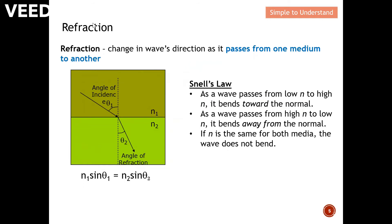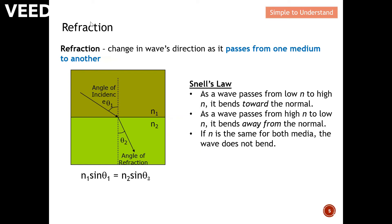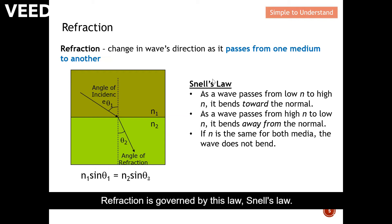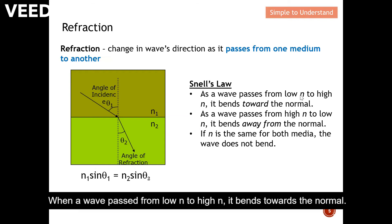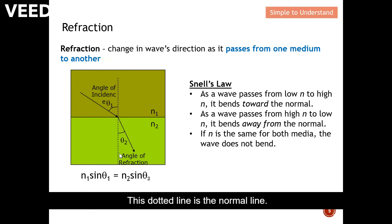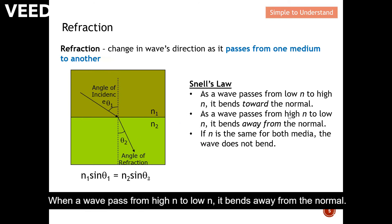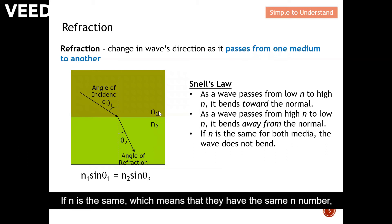Next, let's understand what is refraction. When an electromagnetic wave passes from one medium to another medium, refraction occurs. Refraction is governed by Snell's law. When a wave passes from a low refractive index medium to a high one, it bends towards the normal — this dotted line is the normal line. When a wave passes from high to low, it bends away from the normal.